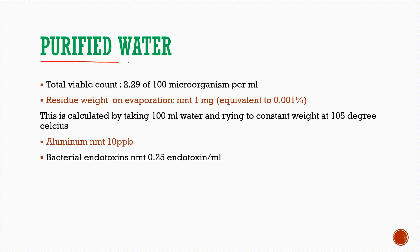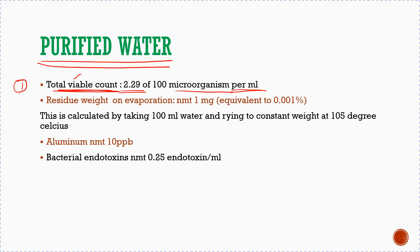First, let's start with purified water. The characteristic of it is that per ml, 2.29% of microorganisms should not be available — meaning living microorganisms. The other characteristic is that you will take 100 ml of purified water and check it.